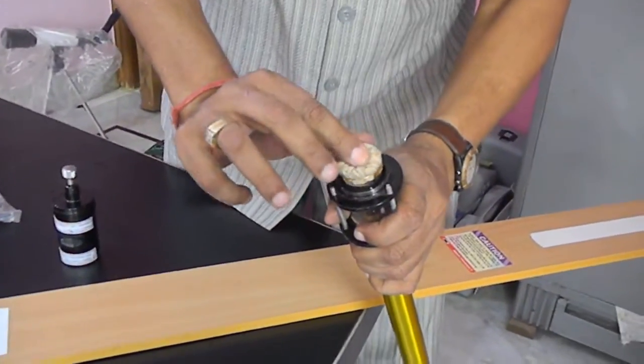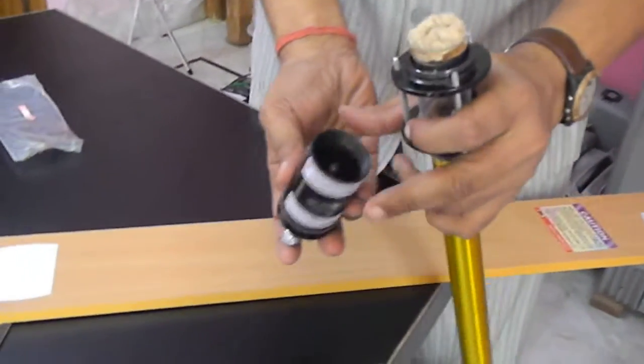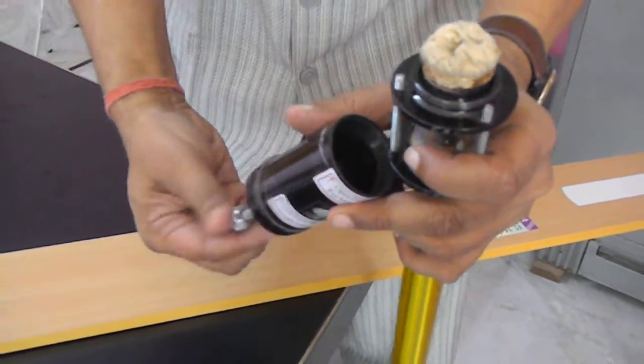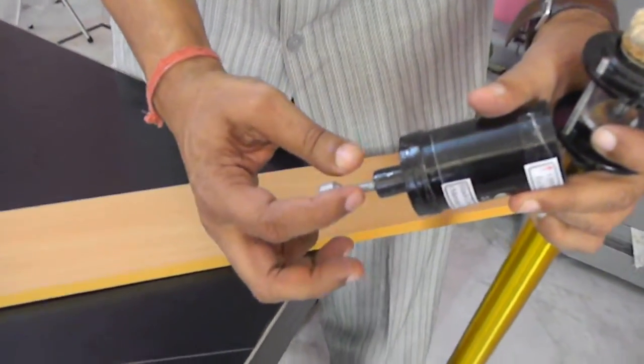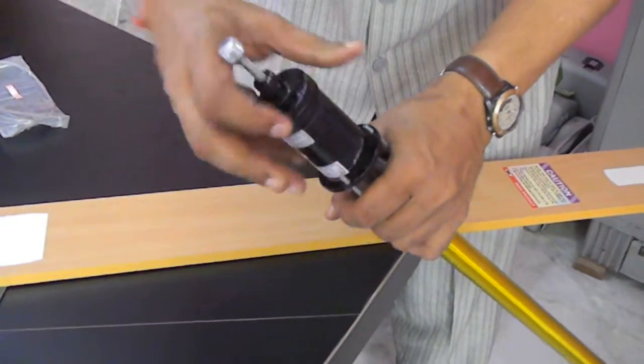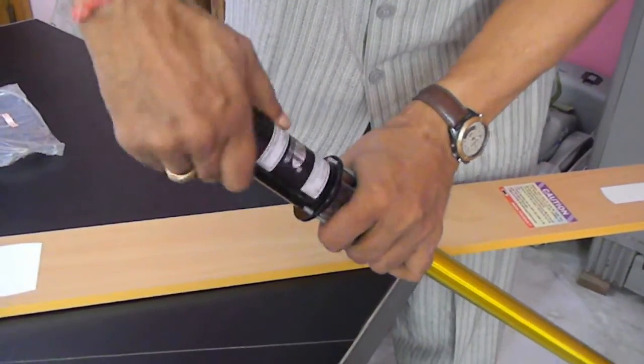Keep it like this. Now the next step: there is one rubber cap here. Just open a part of it, about one inch up to this section, and put this back.